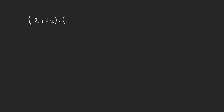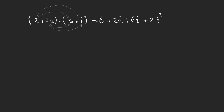So let's multiply these two complex numbers. First we multiply two by three which is six, then two by i which is two i, then two i multiplied by three which is six i, and then two i times i which is two i squared.